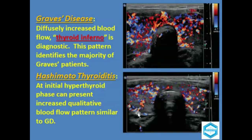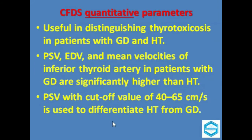In Hashimoto's thyroiditis, the initial phase of hyperthyroidism will show increased vascularity, but qualitatively we can see that the vascularity compared to Graves' disease is lesser. The quantitative parameters of color flow Doppler sonology are very useful in distinguishing thyrotoxicosis in patients with Graves' disease and Hashimoto's thyroiditis.